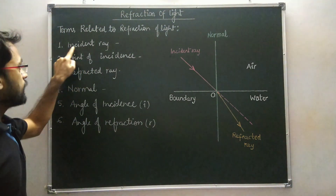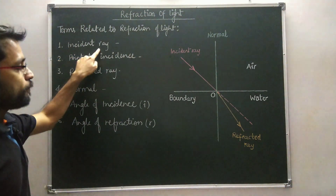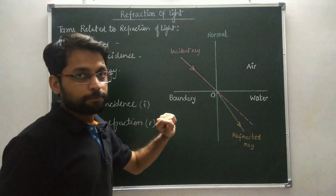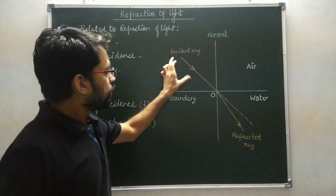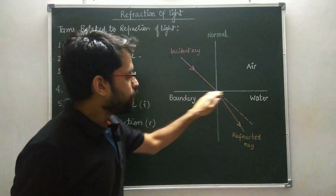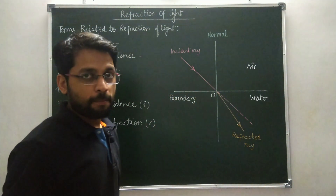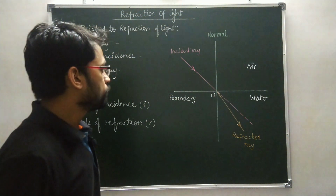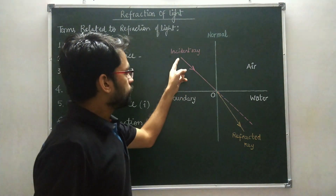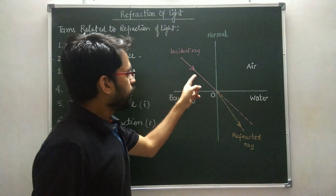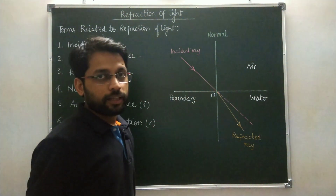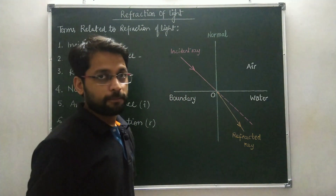The first term is incident ray. Incident ray is the light ray incident on the boundary separating the two mediums. The light ray whose direction is towards the boundary is known as the incident ray.